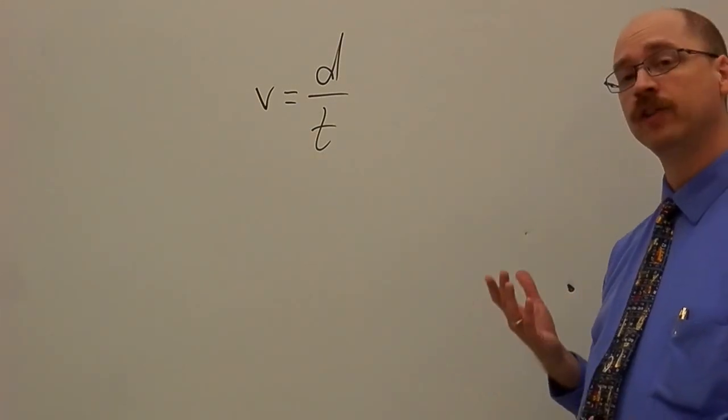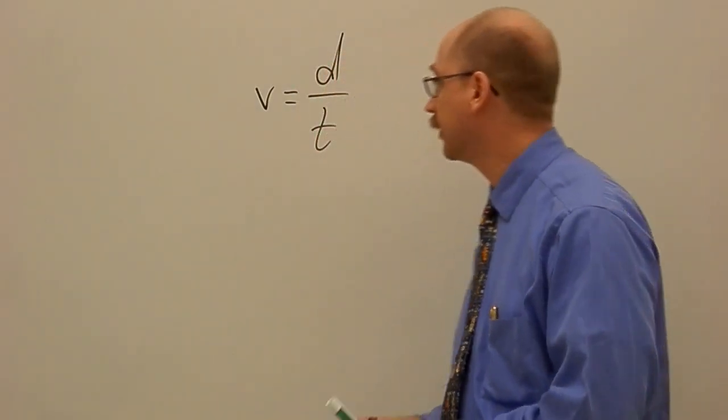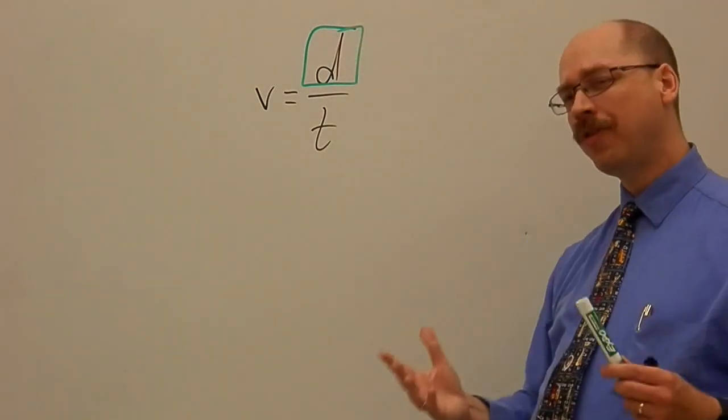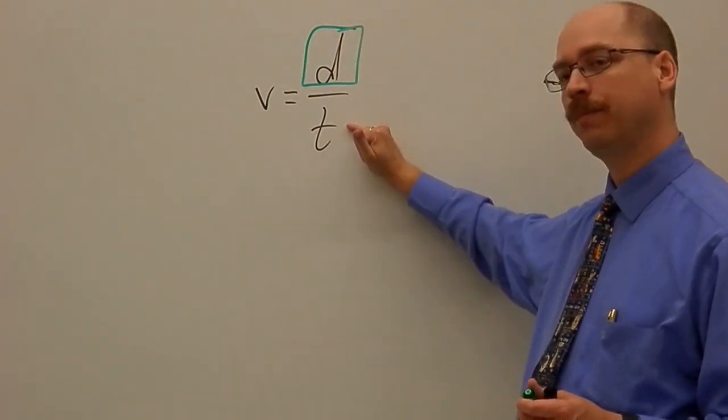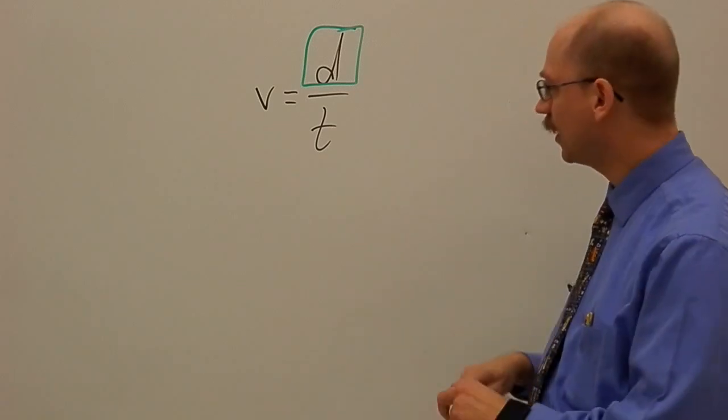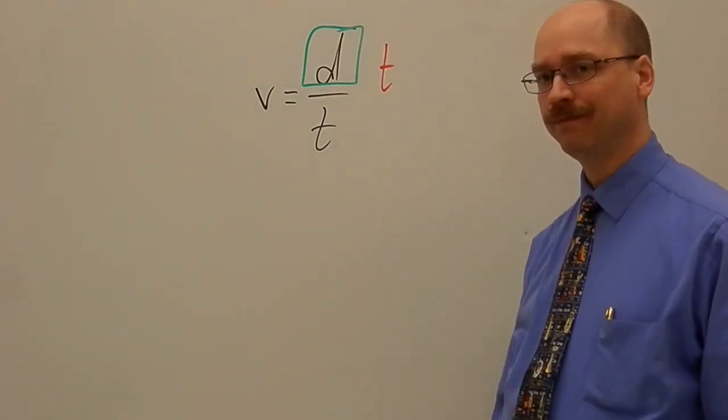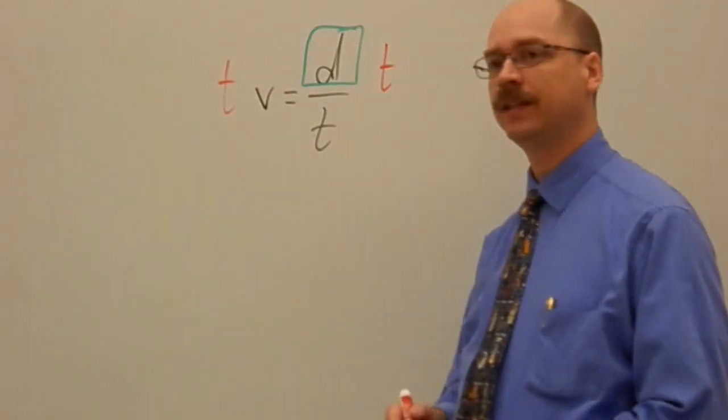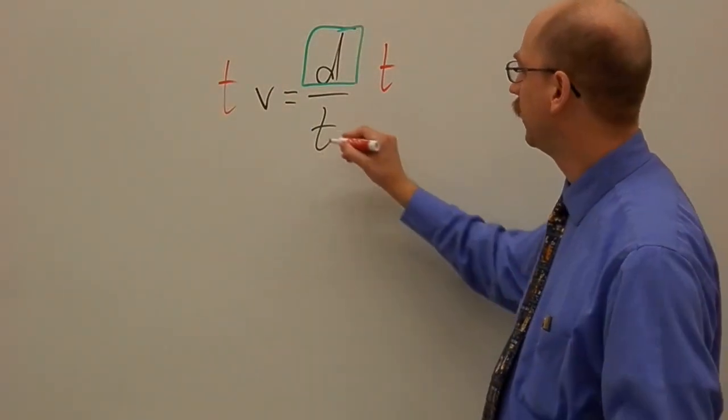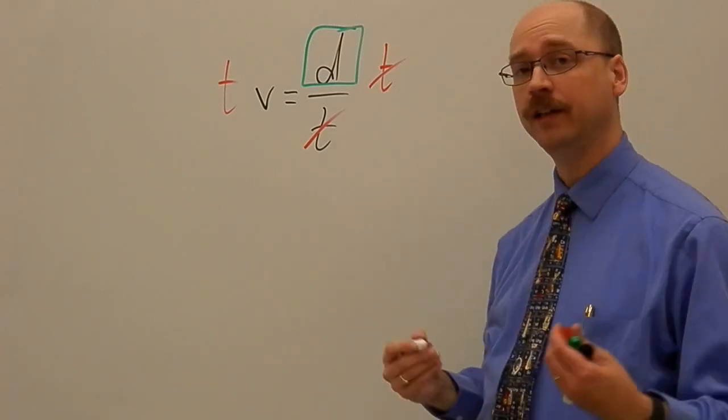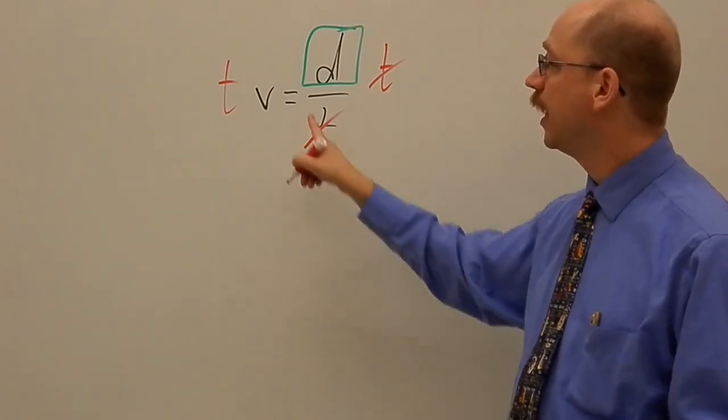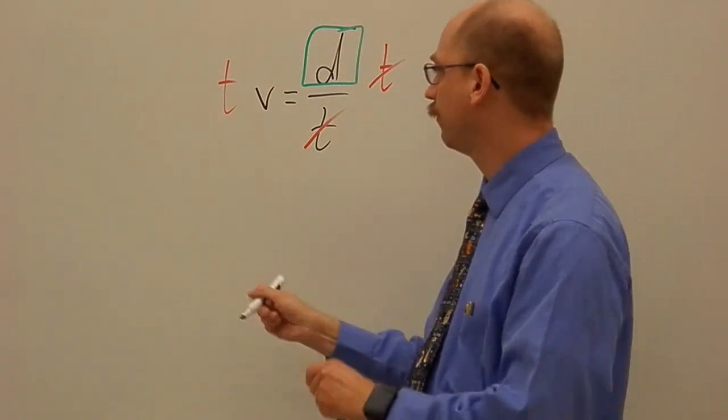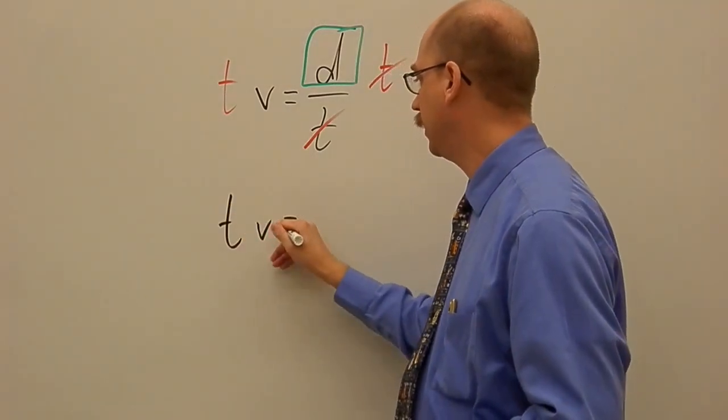So what I'm looking at is I want to get D all on its own. What's the one thing being done to D right now? We're dividing it by T. That's it. So I'm going to multiply by T because that's the opposite of division. I'm going to do the same thing to the other side. T and T divided by T equals 1, it cancels. I don't get rid of it on this side because it's not canceling on the other side. This would leave me with the formula TV equals D.